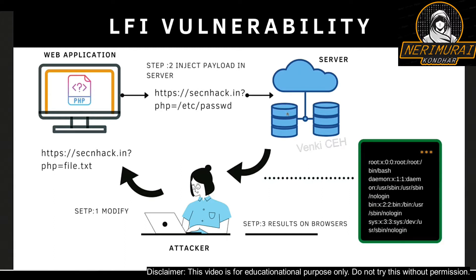Whenever the URL gets executed successfully, the server will respond by sending that file back to the web browser. In this example, the attacker is trying to access a password file from the Linux environment, and the server presents the file back to the browser. Likewise, an attacker can inject any payload which can be executed on the server by accessing its own local files. There are plenty of local files which can be exploited by a hacker.